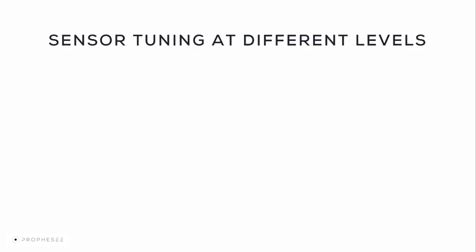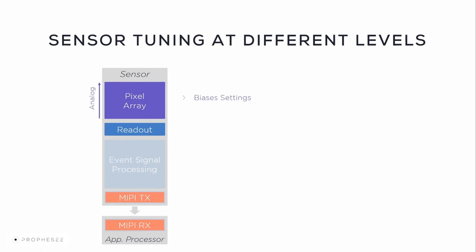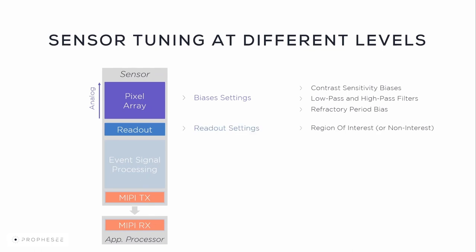Sensor tuning can be performed at different levels. At the pixel level, you can adjust bias settings denoting contrast sensitivity, low and high-pass filters, and the refractory period. On the sensor readout level, you can optimize the readout by setting one or multiple regions of interest or non-interest. On the digital level, you can do digital event filtering — for example, using digital crop, anti-flicker, event filtering, event rate control, and event compression.